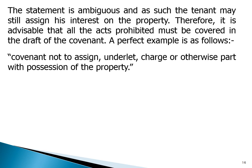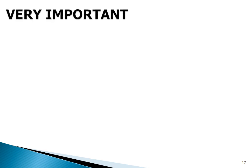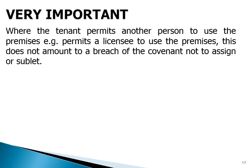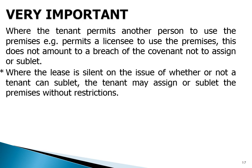A proper example is: 'covenant not to assign, underlet, charge, or otherwise part with possession of the property.' Where the tenant permits another person to use the premises — e.g., permitting a licensee to use the premises — this does not amount to a breach of the covenant not to assign or sublet. Where the lease is silent on whether the tenant can sublet, the tenant may assign or sublet the premises without restrictions.